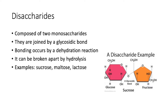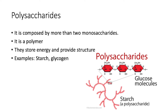Here we have the disaccharides, which are composed of two monosaccharides. As you can see in the image, there is a perfect example of how they are united. The bonding occurs due to a dehydration reaction, and they can actually be broken down by hydrolysis. Perfect examples of this are sucrose, maltose, or lactose — for lactose, we have our common everyday milk.